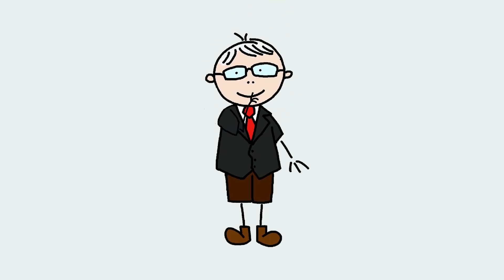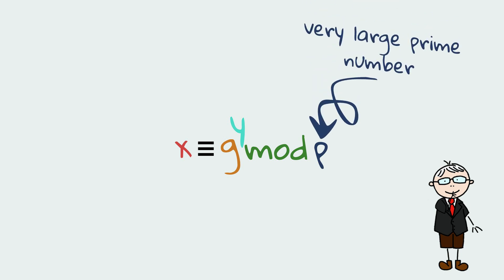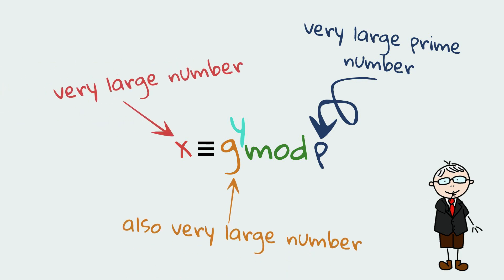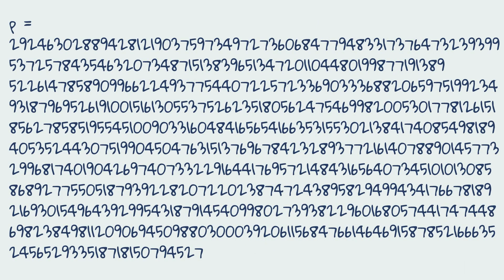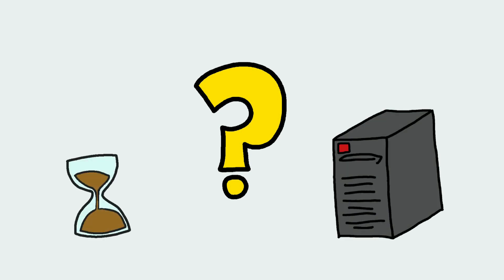Now here is where it gets interesting. Let's say we have x as g to the power y mod p. But now we have p as a very large prime number, and g and x are also very large numbers — really large. Imagine for example p is 2048 bits. This is the gist of the discrete logarithm problem, and even with current generation computers it would take a very long time to solve.